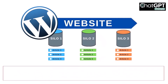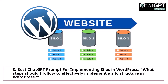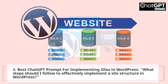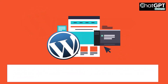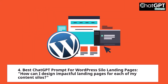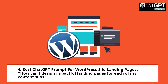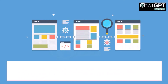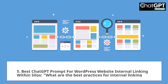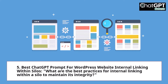3. Best ChatGPT Prompt for Implementing Silos in WordPress: What steps should I follow to effectively implement a silo structure in WordPress? 4. Best ChatGPT Prompt for WordPress Silo Landing Pages: How can I design impactful landing pages for each of my content silos? 5. Best ChatGPT Prompt for WordPress Website Internal Linking Within Silos: What are the best practices for internal linking within a silo to maintain its integrity?